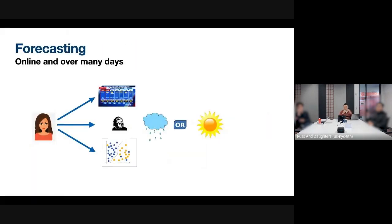The basic setting we're going to consider today is some kind of online forecasting problem. The informal setting we can think of is just weather forecasting, where every day at the beginning we like to predict whether it will be rainy or sunny — these are just binary choices you have to make. Of course, in the worst case this problem may be hard if the environment is adversarial. What's going to help us is that you have access to a set of experts.